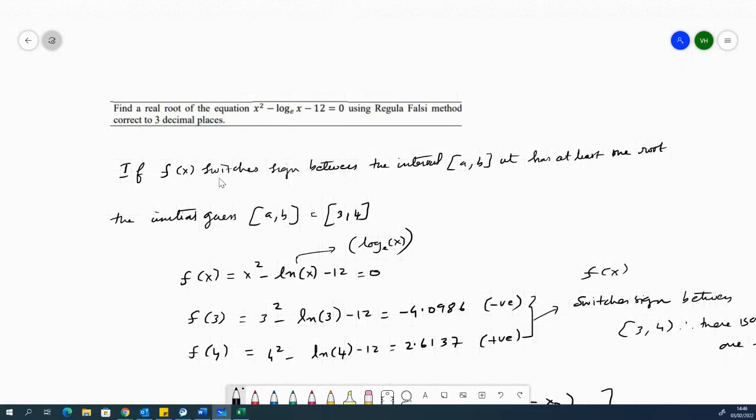Now, it says that if f(x) is switching sign between the interval [a, b], it has a root, well, at least one real root.